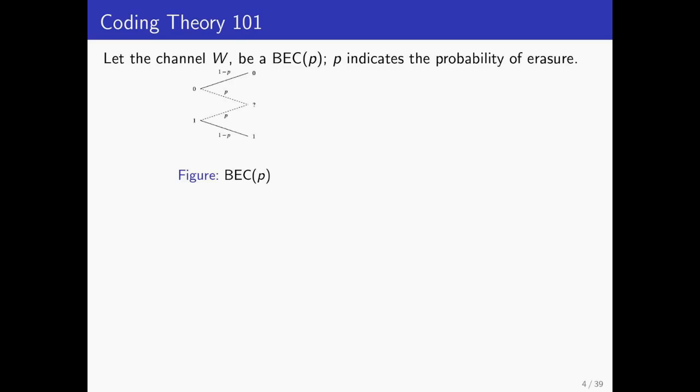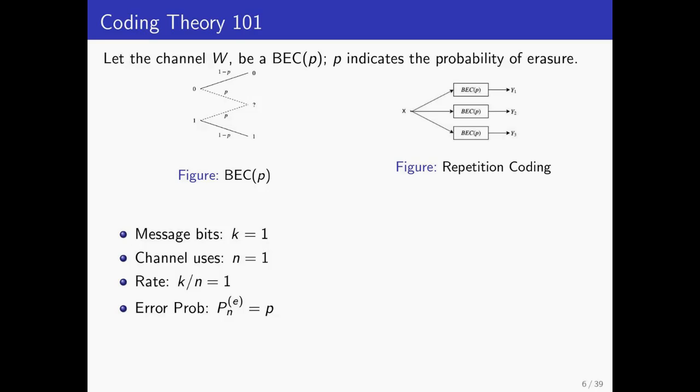A single bit is being transmitted over a binary erasure channel or BEC, which with probability P independently erases each bit. If a single bit is transmitted as it is, the probability of being lost is just P. But Alice could also just try to repeat the same bit multiple times, say thrice. In this case, the message is only lost if all the three transmitted bits are erased. While this guarantees a higher likelihood of Bob receiving the original message, the catch is that the channel is used thrice, which costs power.